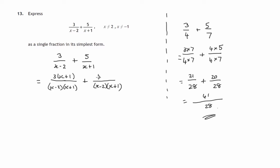5 times (x-2), then the bottom of these fractions is identical. We've got (x-2) times (x+1). Therefore, we can take the top line: 3 lots of (x+1) plus 5 lots of (x-2).